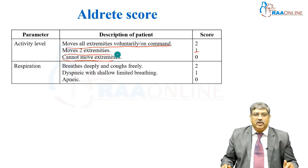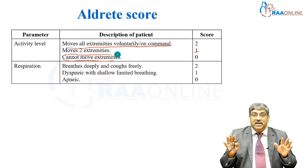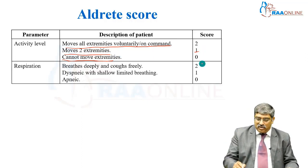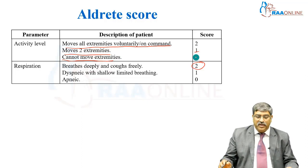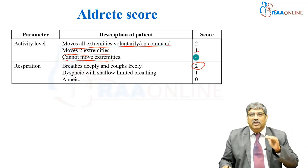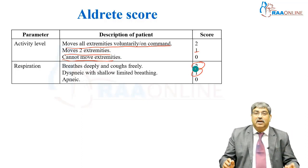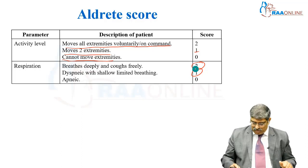For respiration: if the patient breathes deeply and coughs freely, the score is 2. Dyspnea with shallow or limited breathing scores 1. Apneic scores 0.